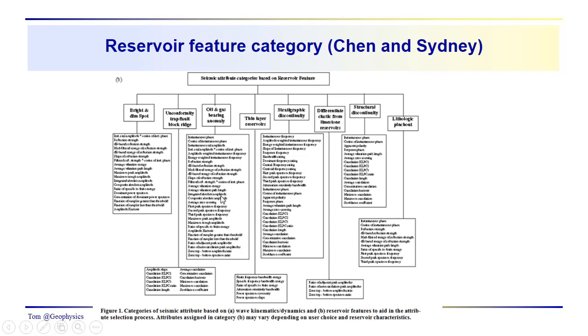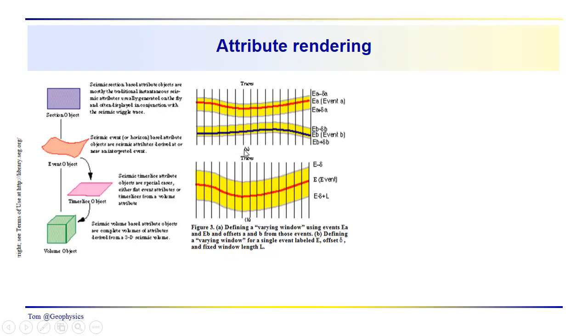This is all pretty alluring to the interpreter because many of these attributes are built into the software. With the click of a button, you can generate attributes and have a look at them throughout your seismic data volume. They give you different views of your data and sometimes uncover things you're looking for - some specific piece of information like structural discontinuities, stratigraphic discontinuities, oil and gas bearing anomalies.